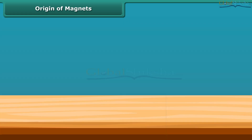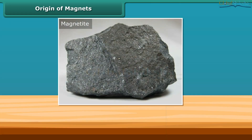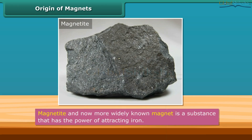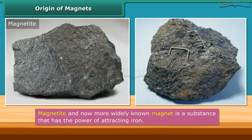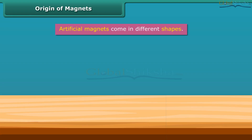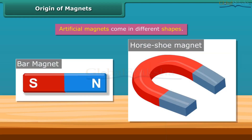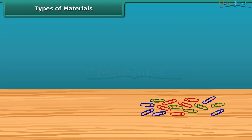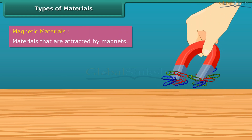This type of rock was subsequently named magnetite, named after Magnus himself. Magnetite is a natural magnet and contains iron. In later days it became more widely known as a magnet — a substance that has the power of attracting iron. Magnets can also be made artificially. Artificial magnets come in different shapes, for example bar magnets and horseshoe magnets.